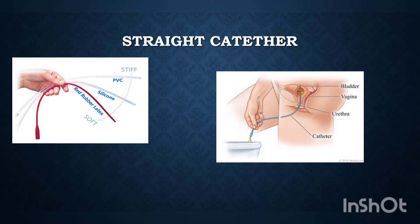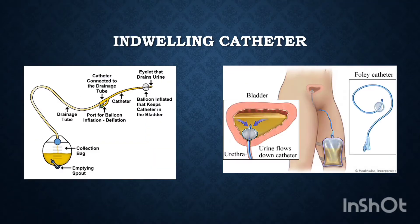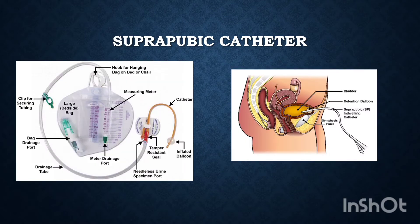The straight catheter is used when the catheter is to be inserted and removed immediately. The indwelling catheter, also known as Foley's catheter, is left inside the bladder to provide continuous urine drainage. This catheter has a balloon surrounding the neck which is inflated after the catheter is introduced into the bladder.